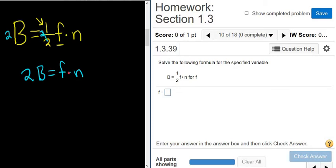It's being multiplied by n, so we'll divide by n to get rid of the n. The n's cancel, and you get 2B over n equals lowercase f.